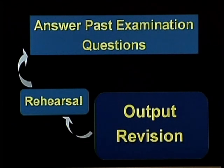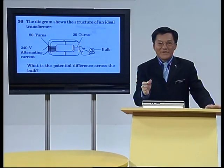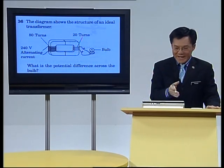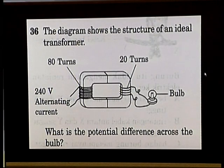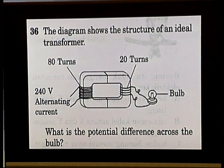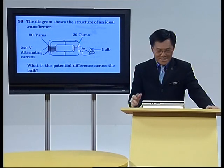What works is that you must try out the questions, answer the questions, and do rehearsal — treat the questions like an examination. Let's go straight into the question. You are given a question like number 36 here: 'The diagram shows the structure of an ideal transformer. What is the potential difference across the bulb?'